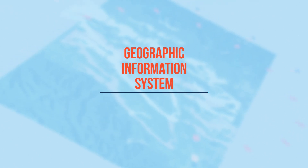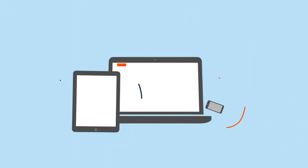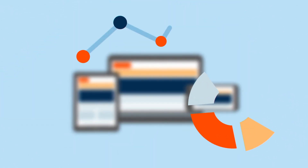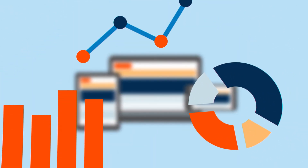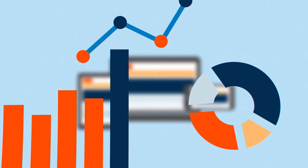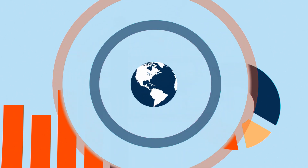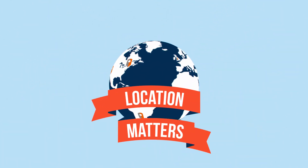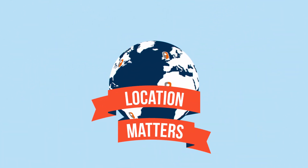GIS stands for Geographic Information System. Using computer hardware, software, and a ton of raw data, we can explore the fundamental principle of geography — that location is important in people's lives.